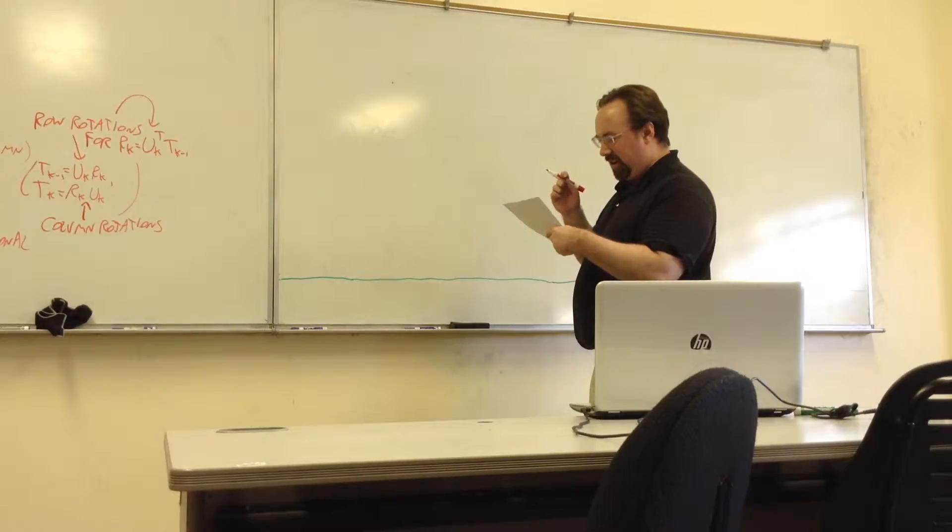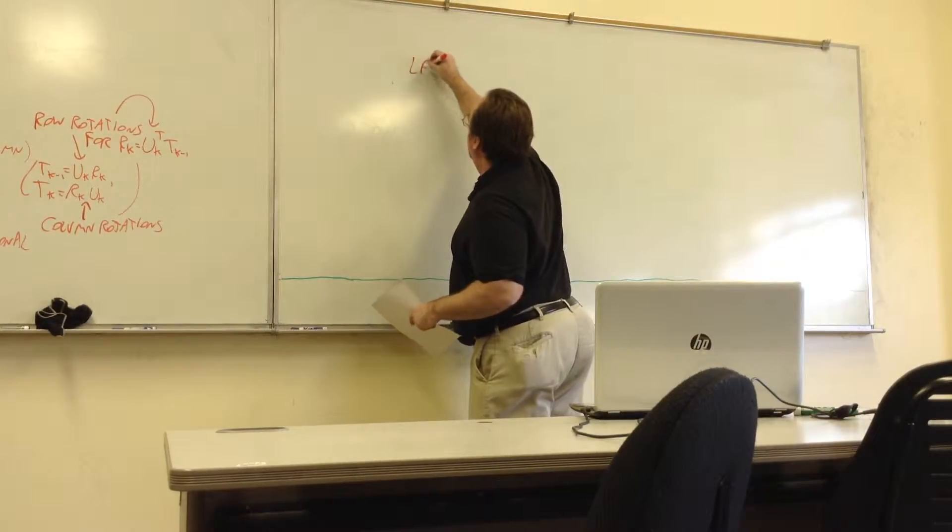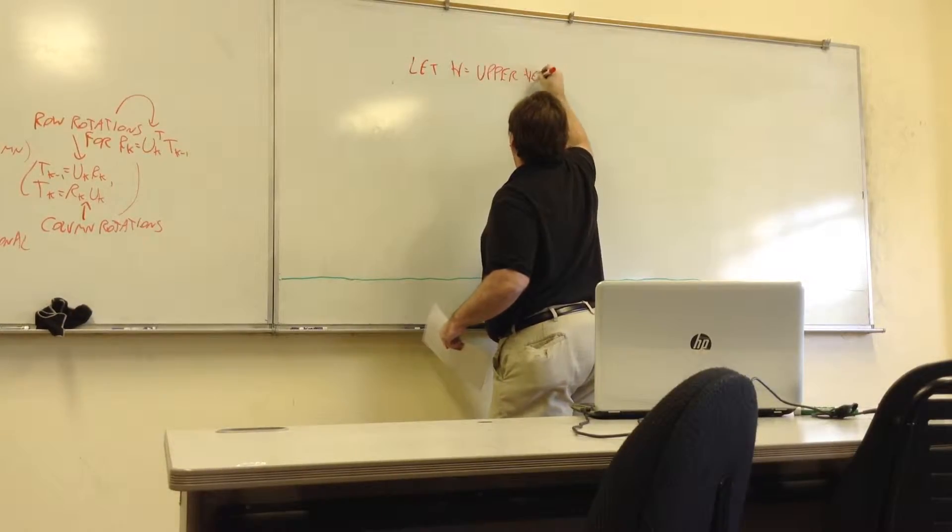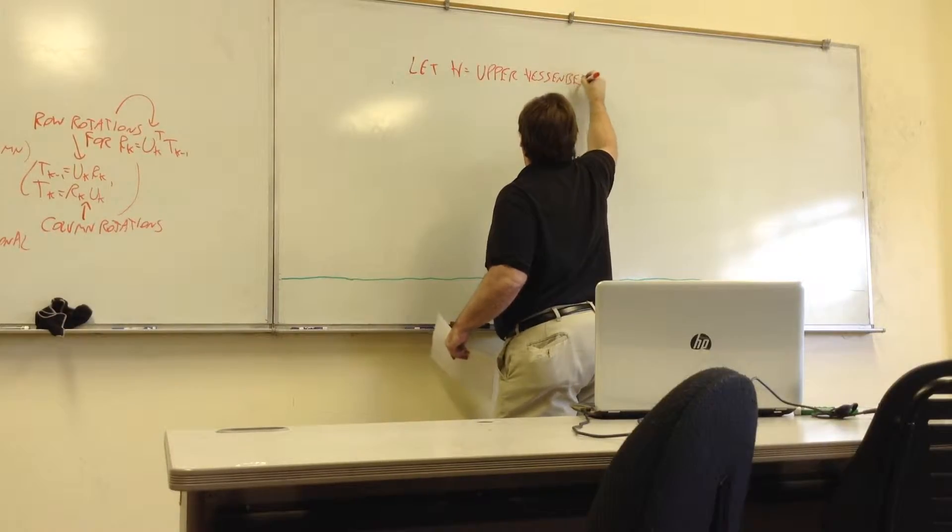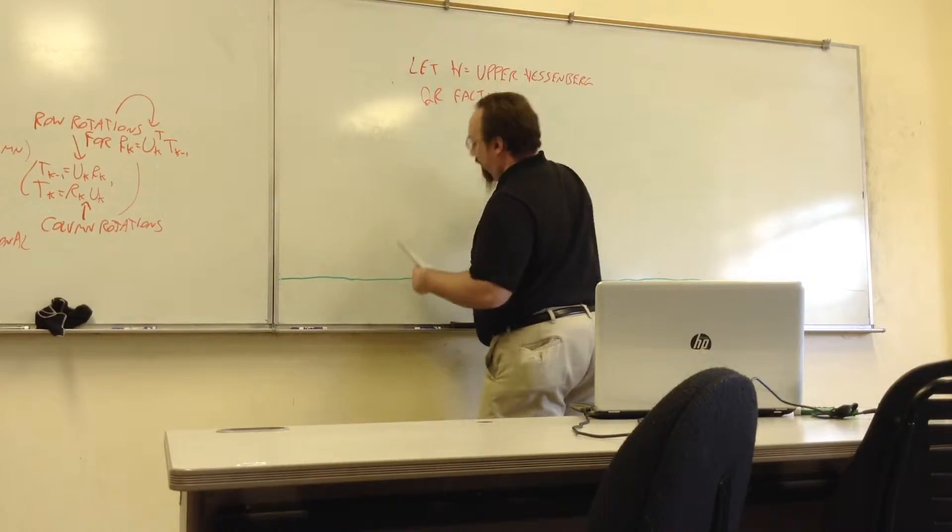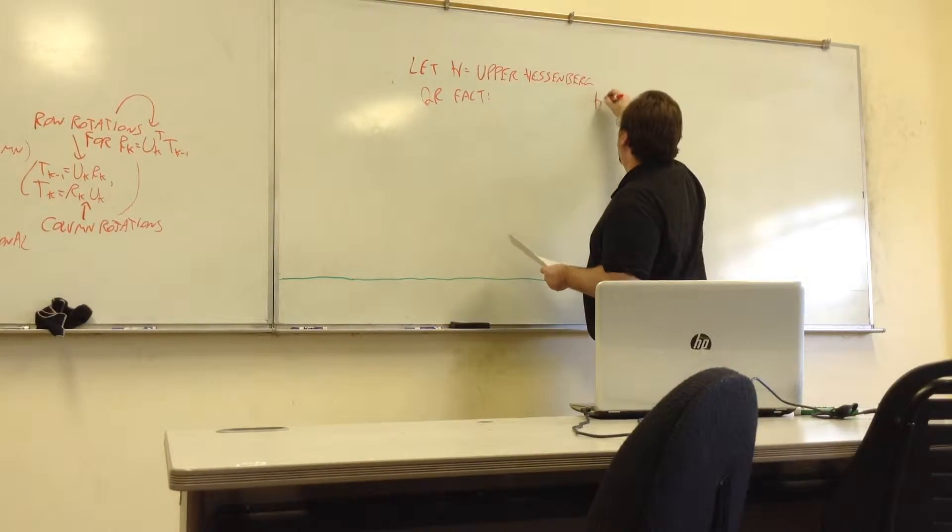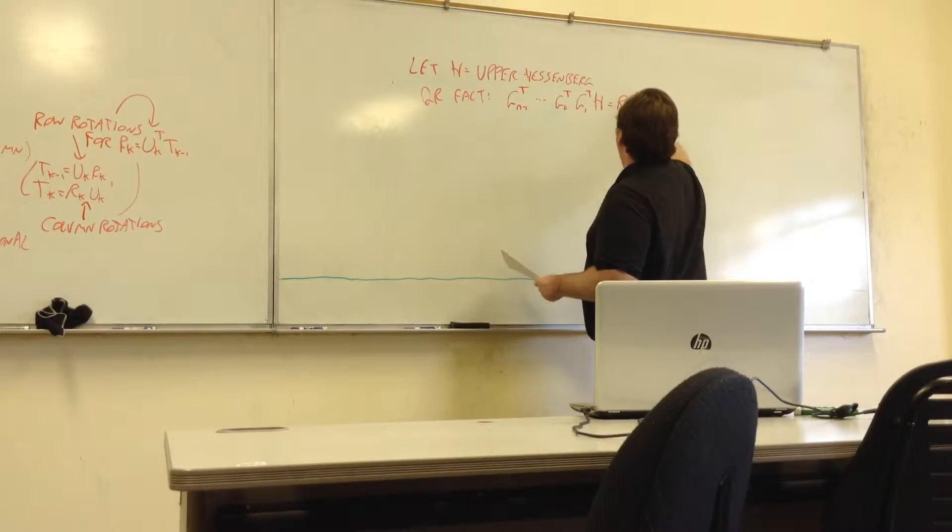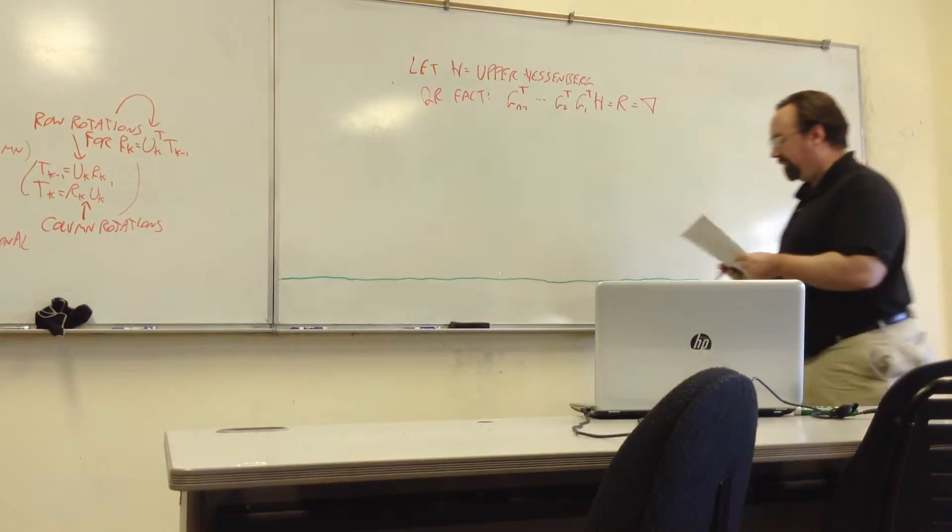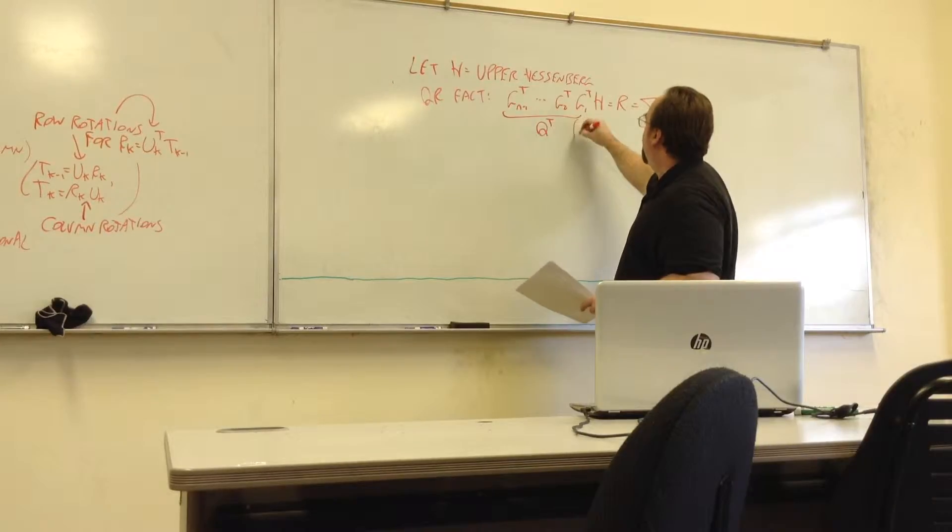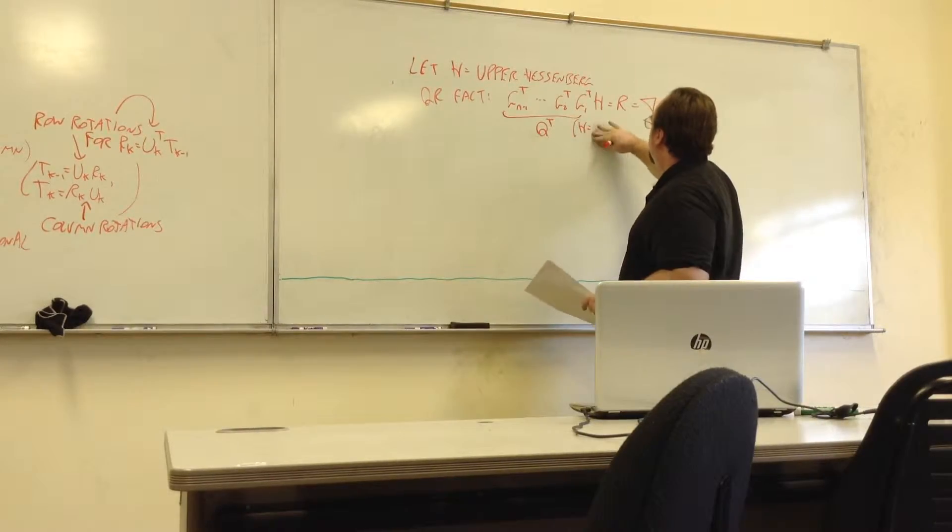So the idea is, if you let H be some upper Hessenberg matrix, so then we perform a QR factorization, and we get, so we start with H, and we apply N minus 1 Givens rotations, row rotations, to obtain an upper triangular matrix R, and this is going to be Q transpose, so H is equal to QR.